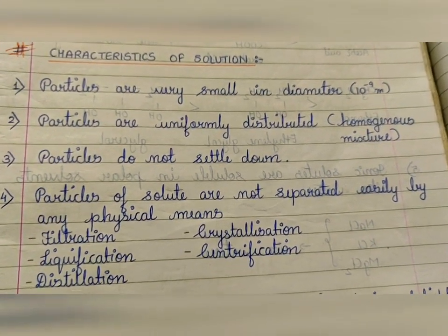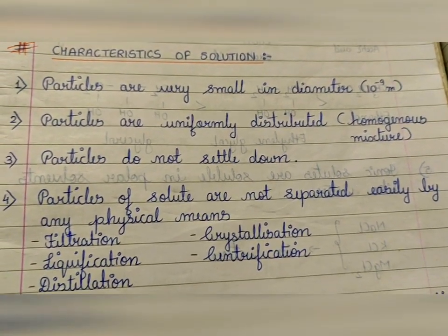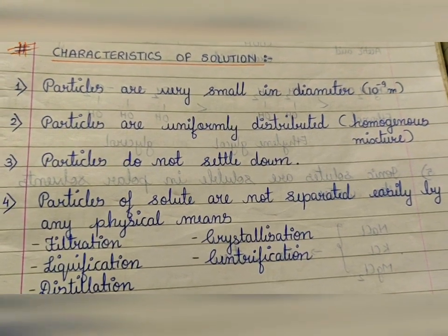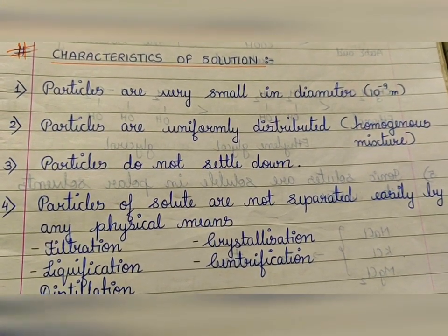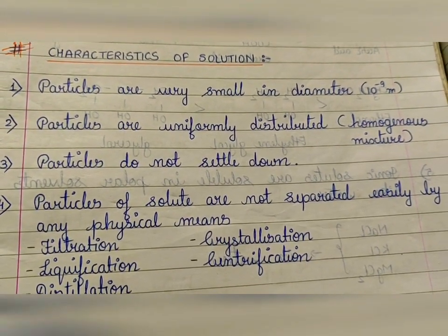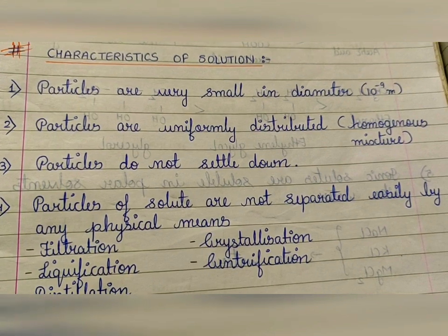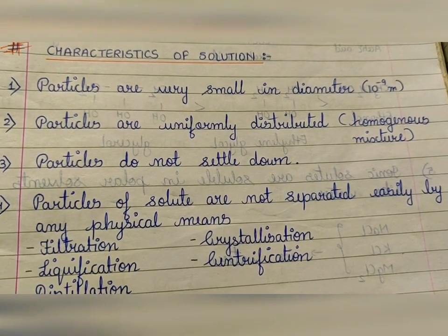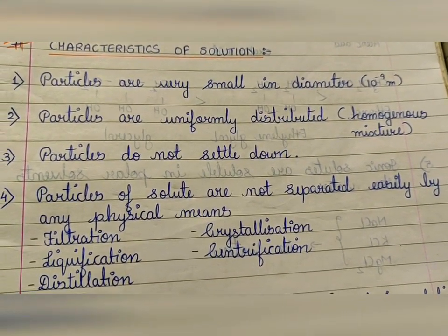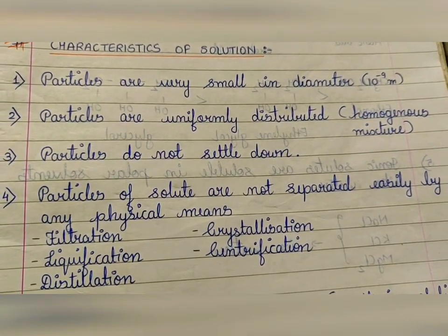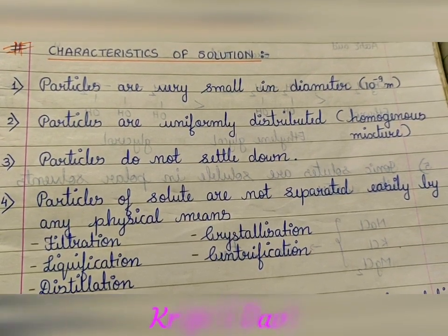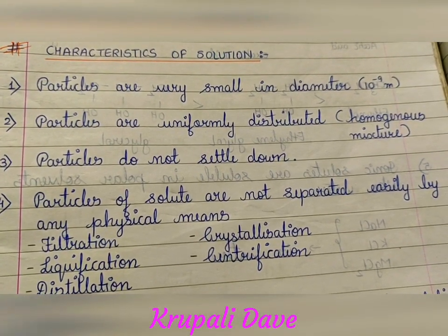Characteristics of solution: particles are very small in diameter, approximately in the nanometer range — that is 10⁻⁹ meters. They are not visible. Once you dissolve sugar in water, after it is completely dissolved, the sugar particles are not visible to us.